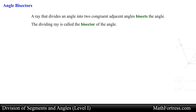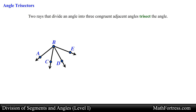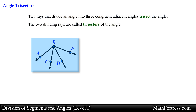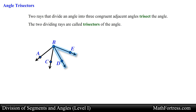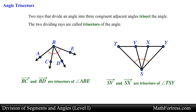Let's end the video by going over angle trisectors. Two rays can divide an angle into three equal parts. Two rays that divide an angle into three congruent adjacent angles trisect the angle, and the two dividing rays are called trisectors of the angle. In the following figure, angle ABC is congruent to angle CBD, which is congruent to angle DBE, so ray BC and ray BD trisect angle ABE. As a final example, if ray SV and ray SX are trisectors of angle TSY, then angle TSV is congruent to angle VSX, which is congruent to angle XSY.